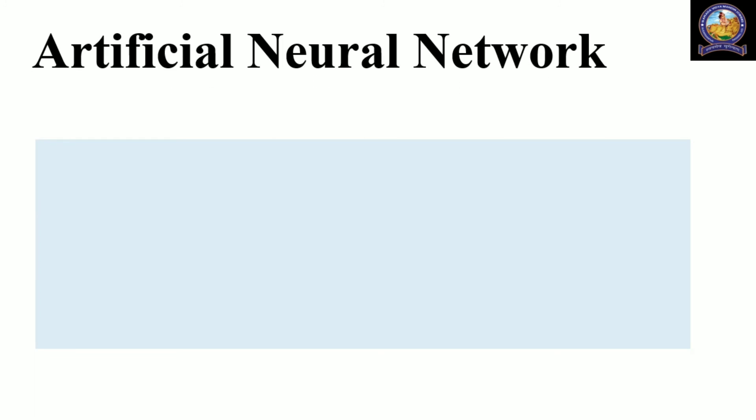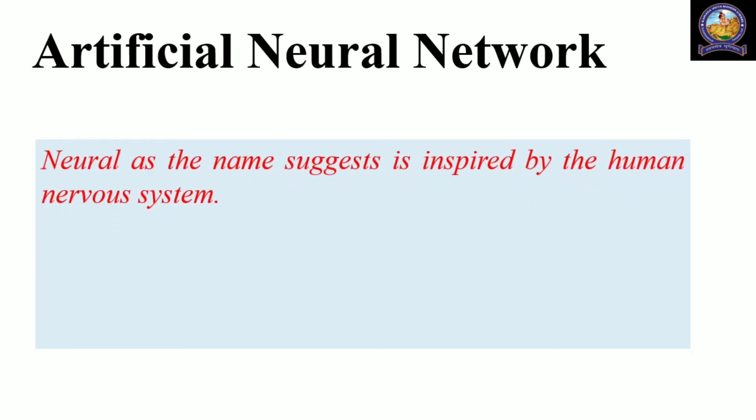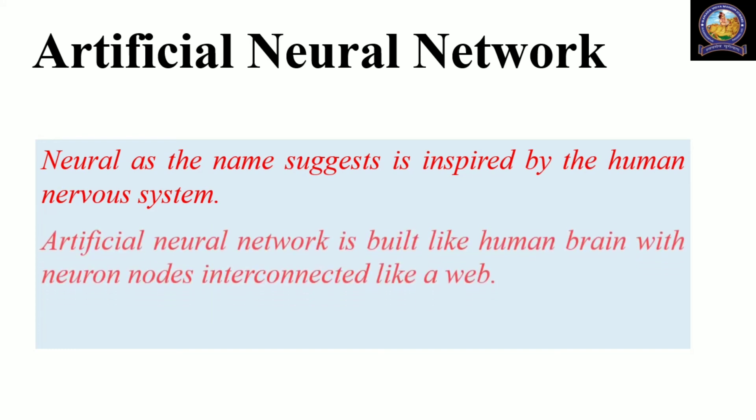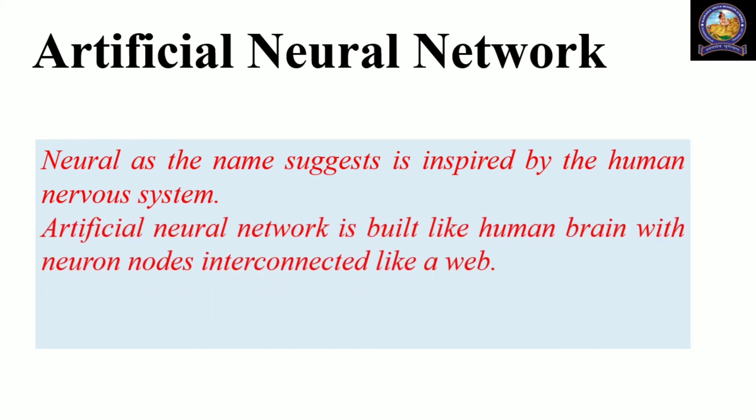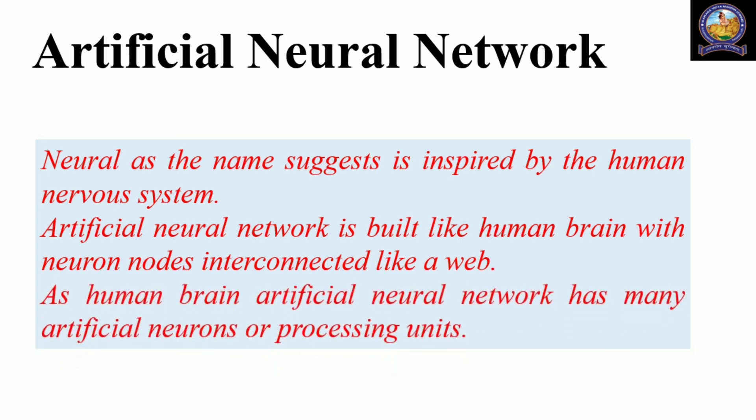Artificial neural network: neural, as the name suggests, is inspired by the human nervous system. Artificial neural network is built like the human brain with neuron nodes interconnected like a web. Like the human brain, artificial neural networks have many artificial neurons or processing units.